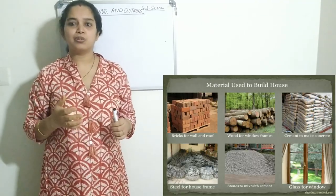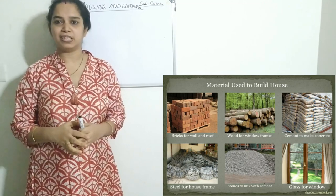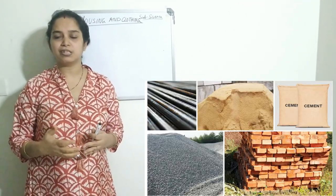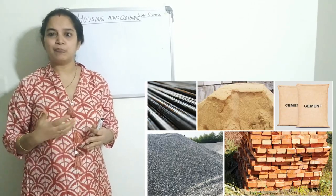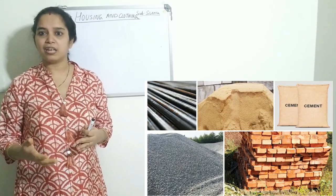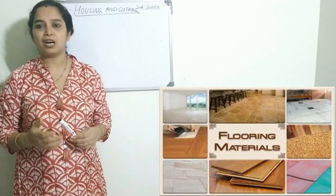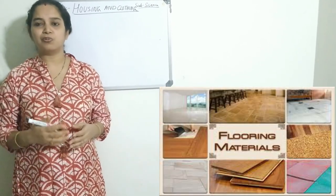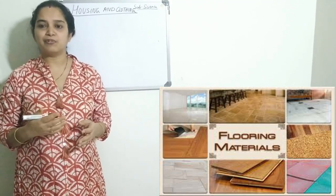As you all know, houses are made up of different materials. Different materials are used in making houses, like wood, cement, brick, stone, and hay. Water also plays a very important role in building houses. Generally, the floor of the houses is made up of marble, tiles, and wood.